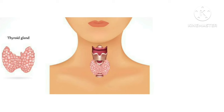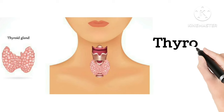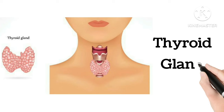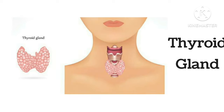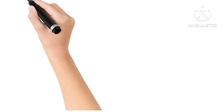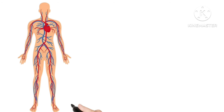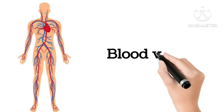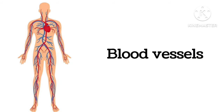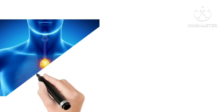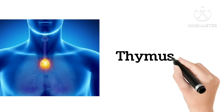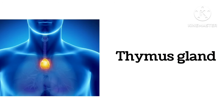Thyroid gland — this is the thyroid gland. Blood vessels — these are blood vessels. Thymus gland — this is the thymus gland.